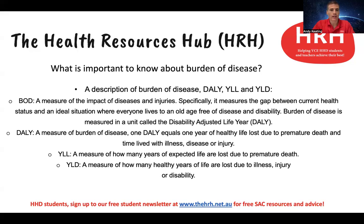YLL is a measure of how many years of expected life are lost due to premature death. For example, if you're a female in Australia expected to live to around 85 years, but you died at 75 due to a health condition like cancer, you've lost 10 years of your life because you died prematurely — you didn't live to your 85-year life expectancy. So that's 10 years of YLL.